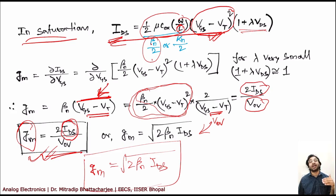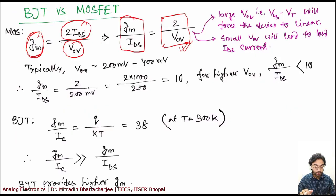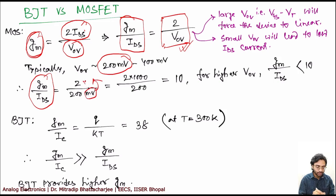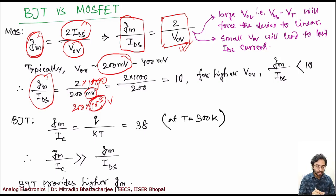So you can't go to a very high VOV and you can't go to a very small VOV — both ways you have limitations. You have to find a typical GM value which satisfies both ends. Typically the VOV values are in between 200 to 500 millivolts. If we take VOV as 200 millivolts, then GM/IDS equals 2 divided by 200 millivolts. Since it is millivolts we multiply by 1000, giving 2×1000 divided by 200, which is more or less 10.